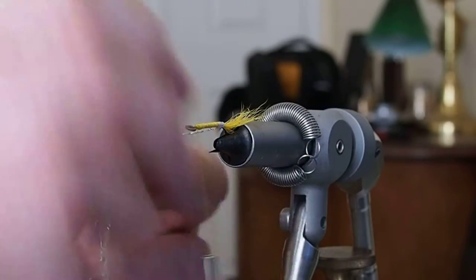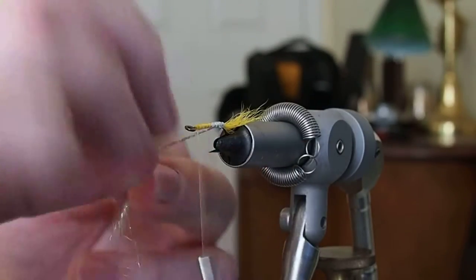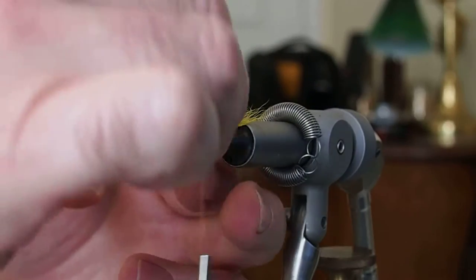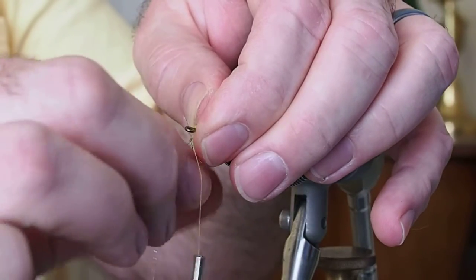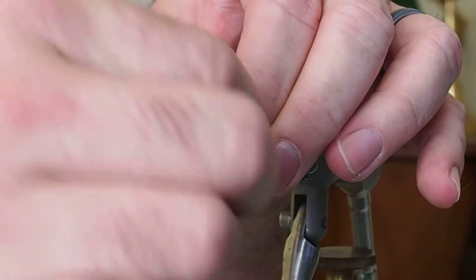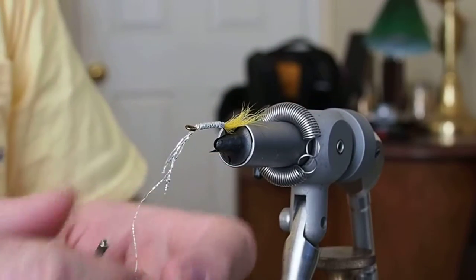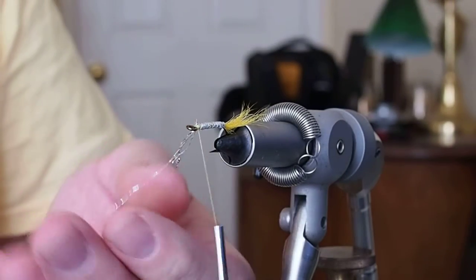Then I'm just going to use this thread and wrap the body with this sparkly tinsel thread. That looks nice. Take your time. Get the flash up to the head, go ahead and capture it with your thread, and we'll give it a trim.